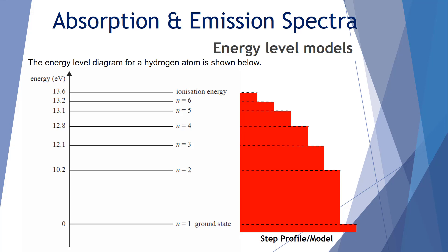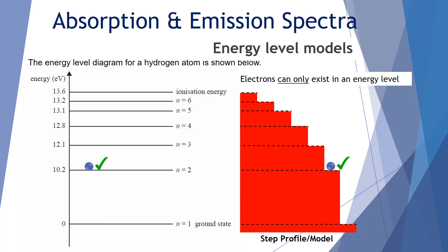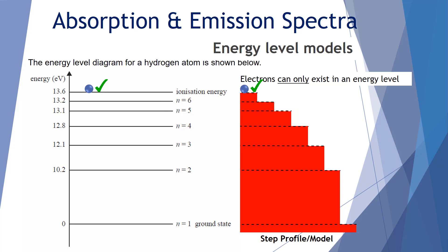Another way of representing this is a step profile or step model, which is very handy for understanding the location of electrons within the atomic structure of hydrogen. An electron can only exist in an energy level — it can be in the ground state n equals 1, n equals 2, n equals 3, n equals 4, n equals 5, n equals 6, and if it reaches the ionization energy level it can be removed altogether.